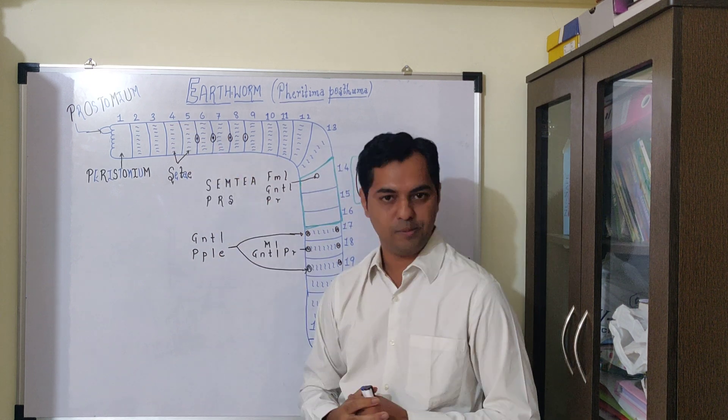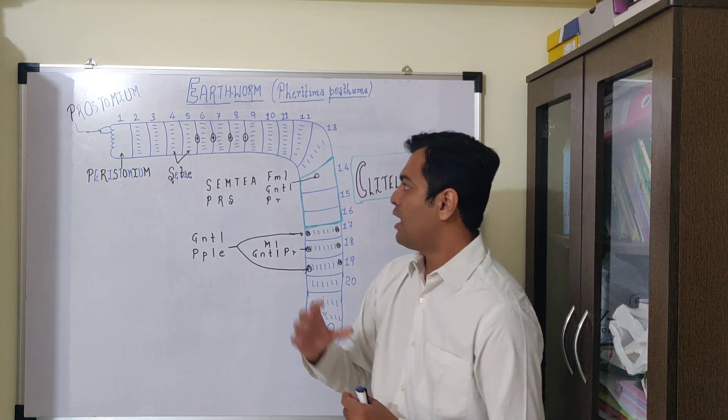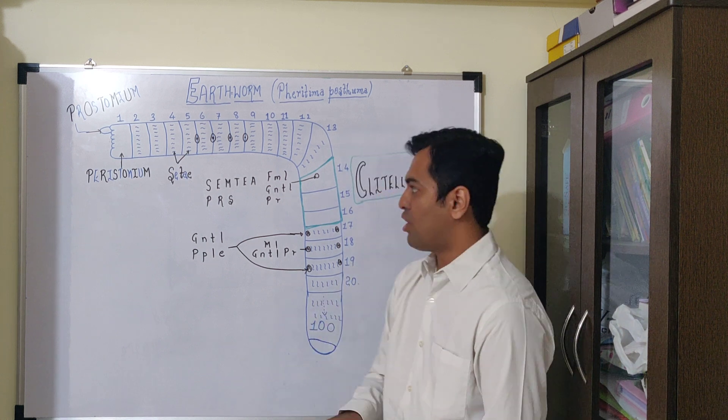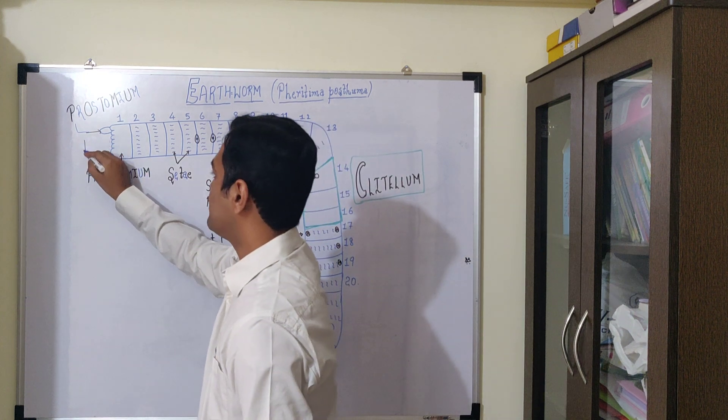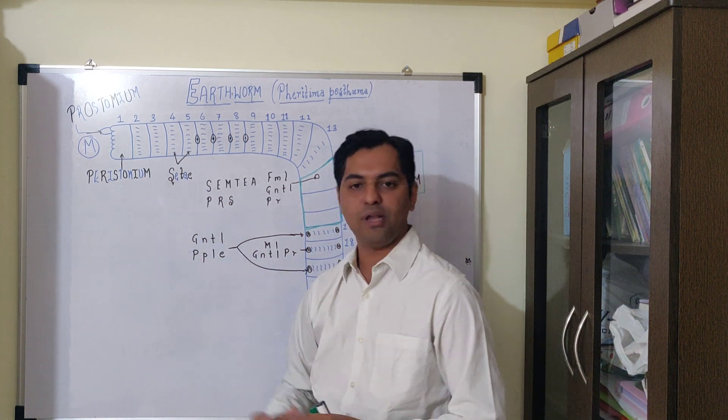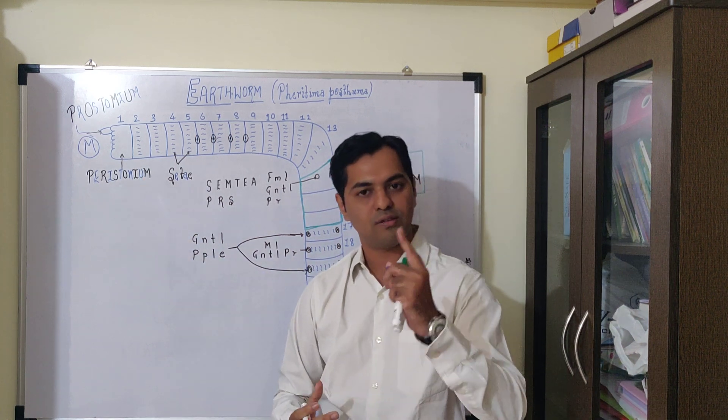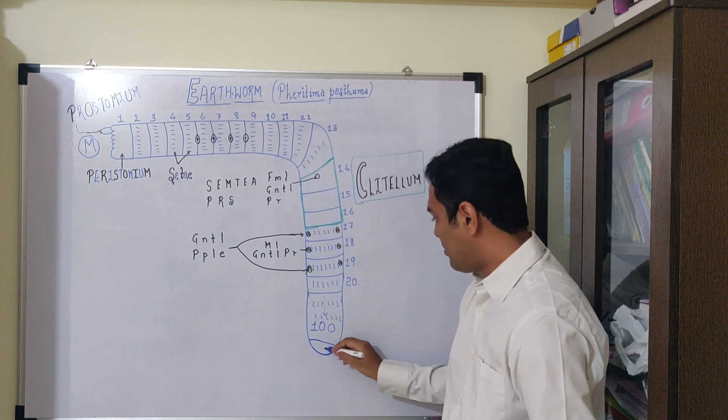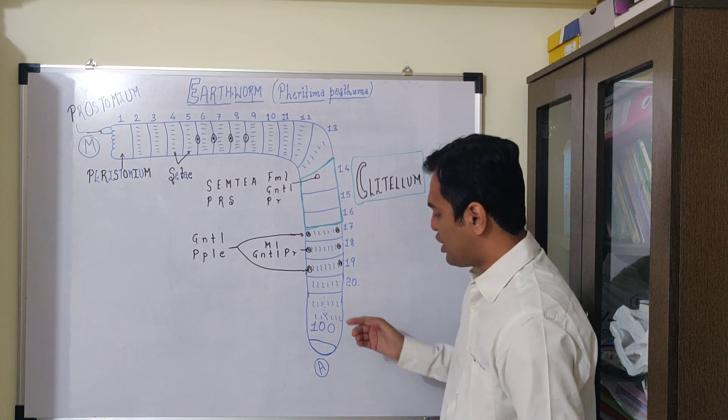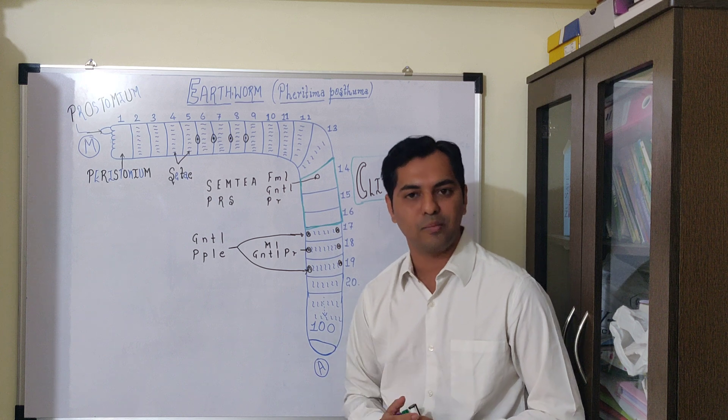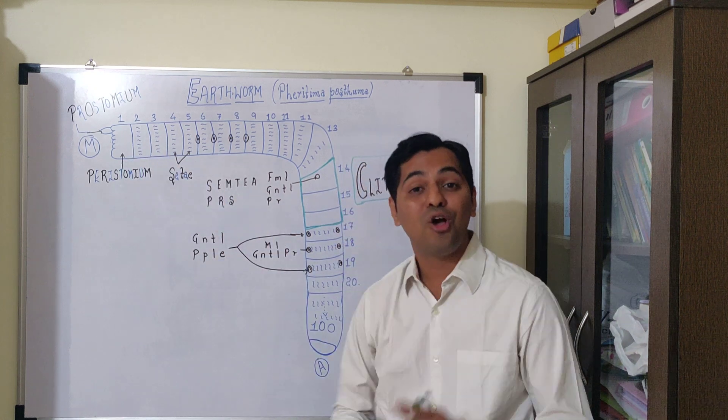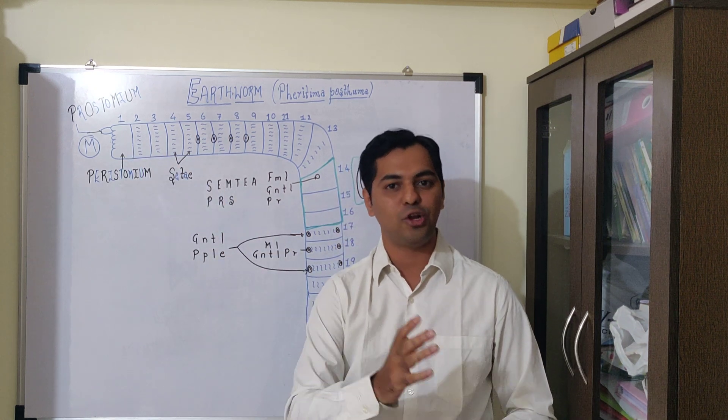We can observe certain openings or apertures. One aperture is the mouth cavity, entering through peristomium. The other aperture after the last segment is the anus, emerging from the anal segment or pygidium. Since it has two separate openings, we call this tube within tube body plan, meaning complete digestive system.